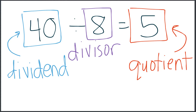The dividend is the number that's being divided. The divisor is what we are dividing by — how many groups, how many rows we're putting it into. And our quotient is our answer.